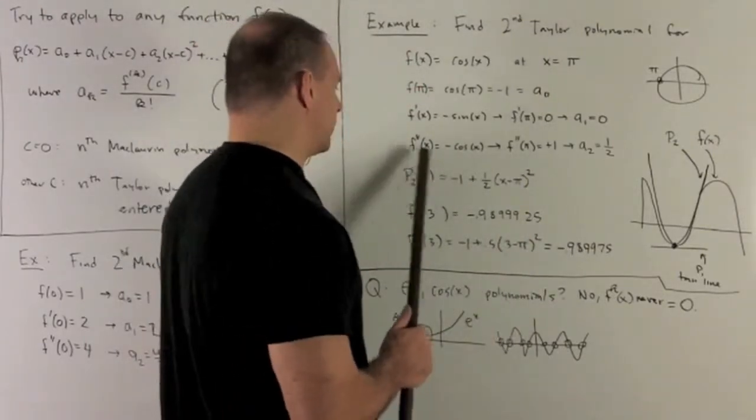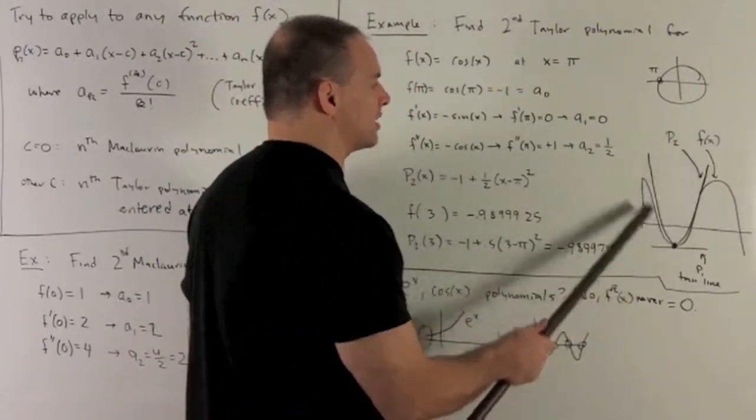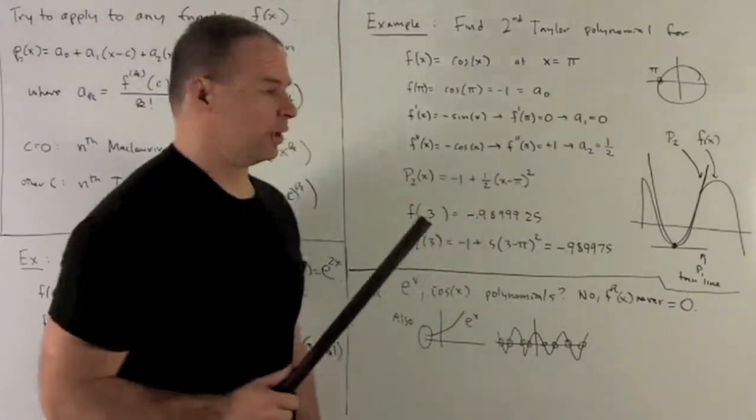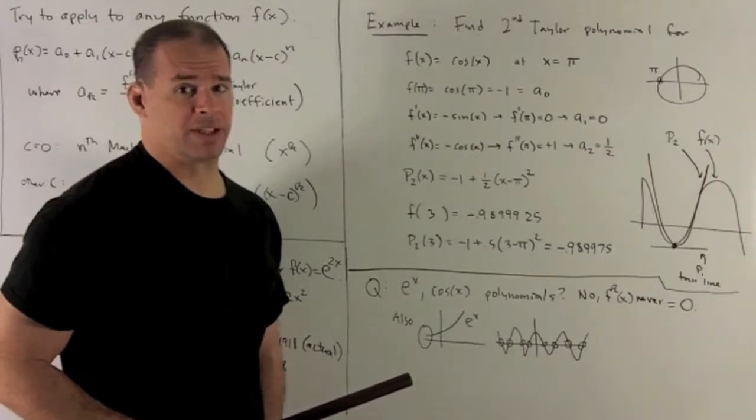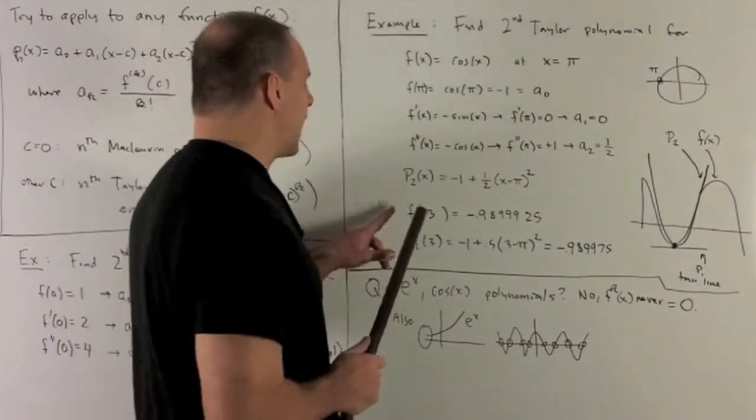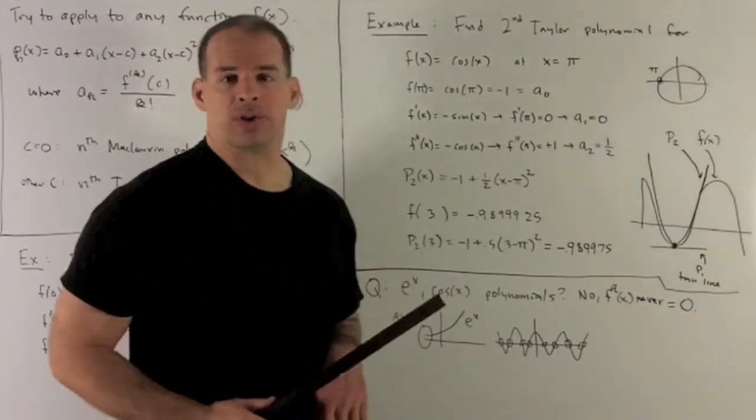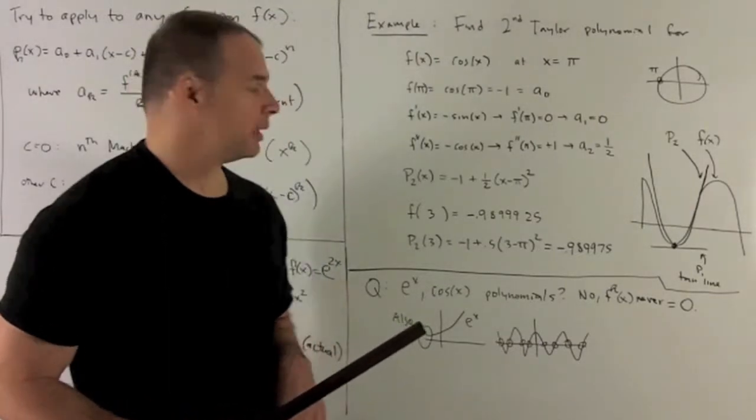That's what the second Taylor polynomial is going to do for you. Of course, we just want to throw an approximation in so we believe that this is accurate. So let's try f(3). 3 is pretty close to π. π is 3.14.